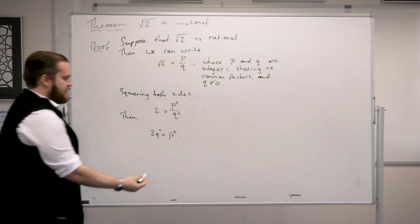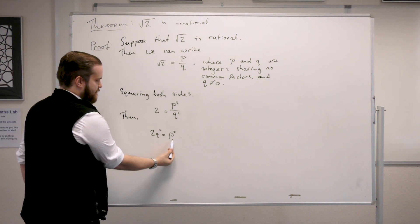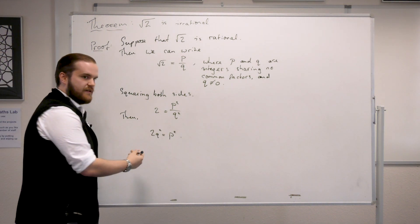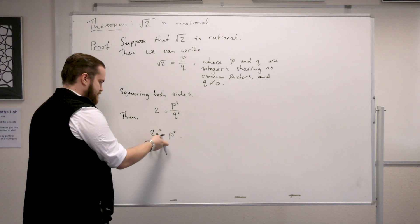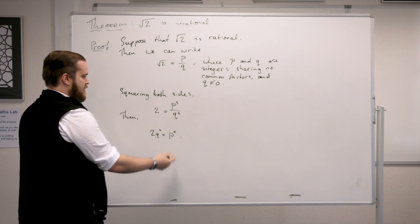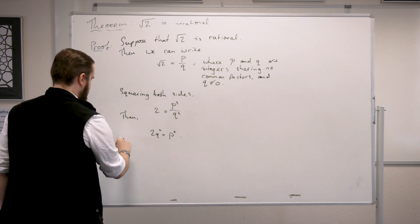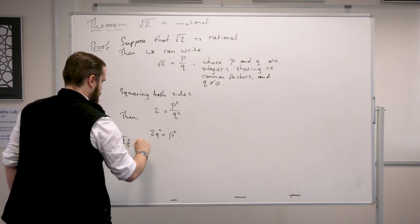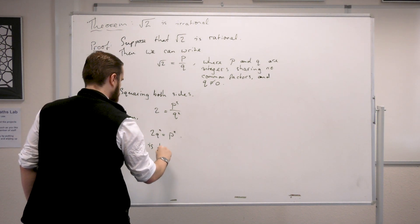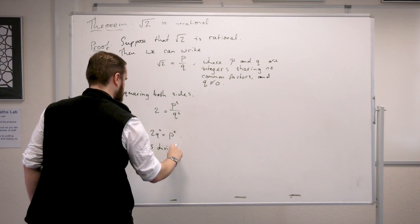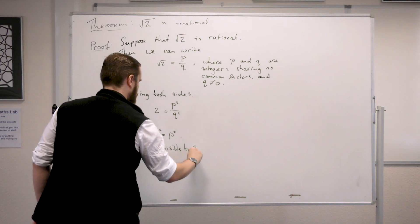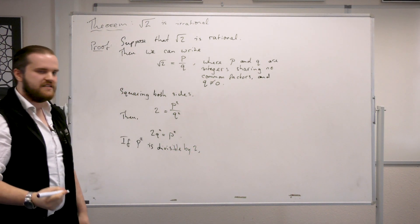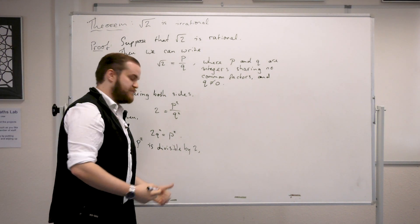And now we've got that p squared is divisible by 2, because we've written it in this form. But if p squared is divisible by 2, then p itself must be divisible by 2, because 2 is prime.